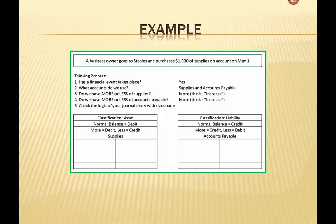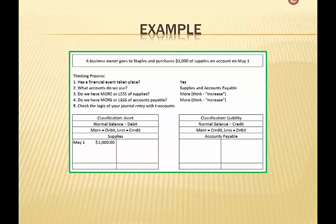Finally we use our T-accounts to check our logic. All right so here we go. If I have more of supplies, which is an asset, the normal balance is a debit. If I'm going to have more of it I will have to debit it. So $1,000 goes into the debit side of this asset account called supplies.